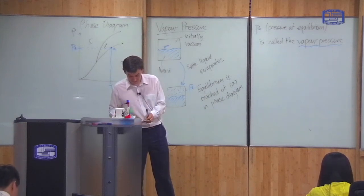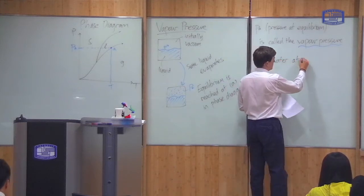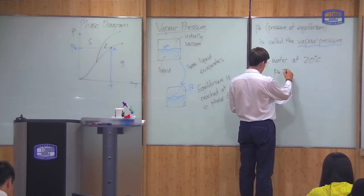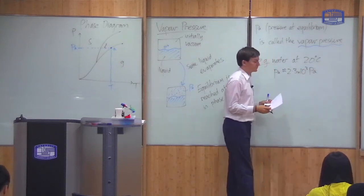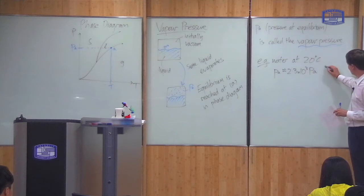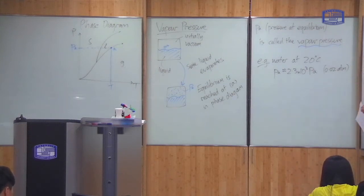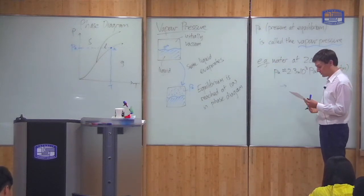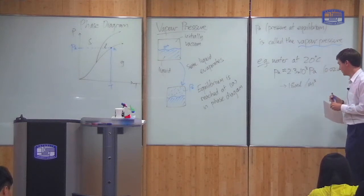Here are some examples to give you an idea. For water at 20 degrees Celsius, the vapor pressure is approximately 2.3 × 10³ Pascals. For reference, this is about 0.02 atmospheres — about 2% of atmospheric pressure. It corresponds to, if you treat this as an ideal gas, about 18 grams of water vapour per cubic metre.